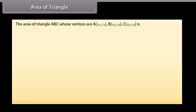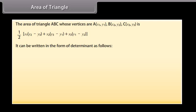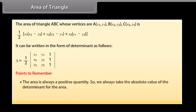Area of triangle: the area of triangle ABC whose vertices are A(x1, y1), B(x2, y2), C(x3, y3) is given by one-half times [x1(y2 minus y3) plus x2(y3 minus y1) plus x3(y1 minus y2)]. It can be written in the form of a determinant. Points to remember: the area is always a positive quantity, so we always take the absolute value of the determinant for the area. The points A, B, and C are collinear if the area of triangle ABC equals zero.